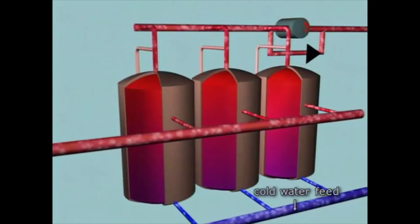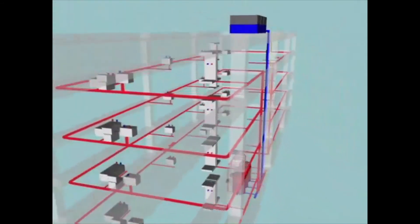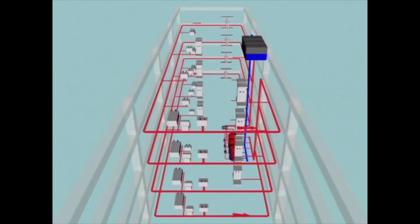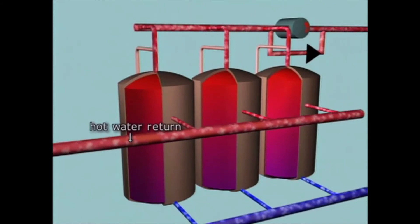The cold water feed pipe enters at the base of the calorifier. The heated water is drawn off from the top of the calorifier and pumped into a distribution circuit referred to as a ring main. When it has completed its journey around the ring main, the water is returned to the calorifier for reheating.